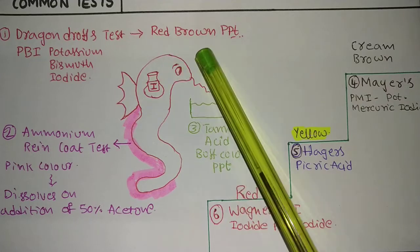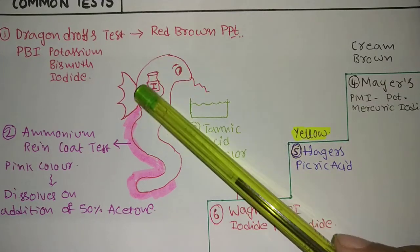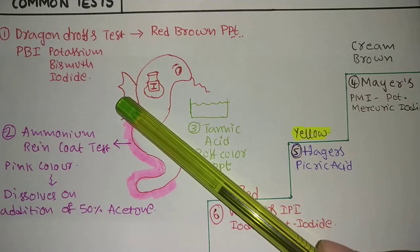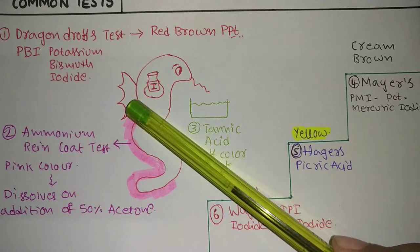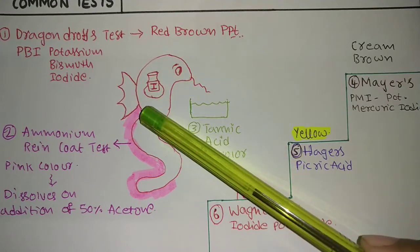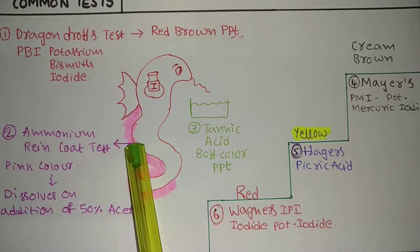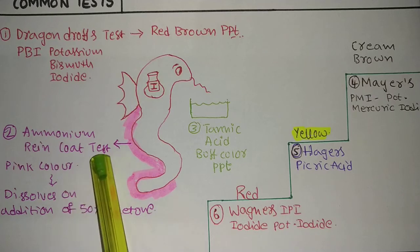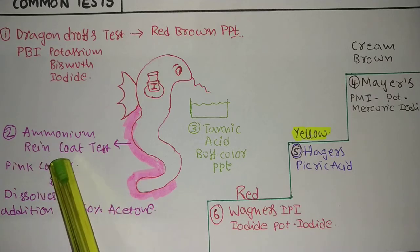The dragon is very dangerous — it has wings. A snake with wings is called a dragon, and it is the official symbol of China. Next, the second test: Ammonium Reineckate test.